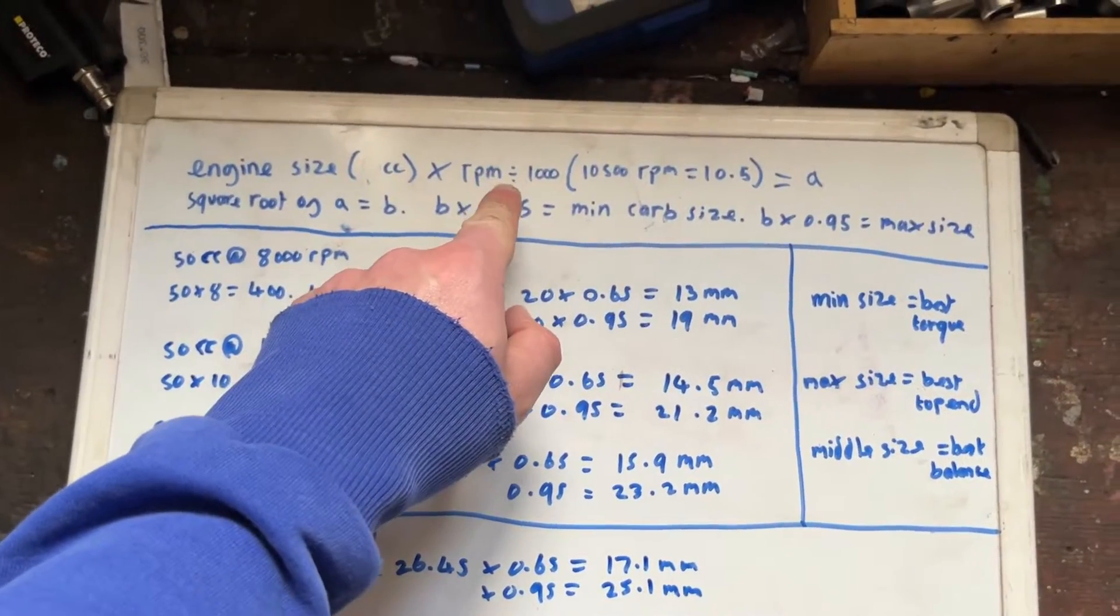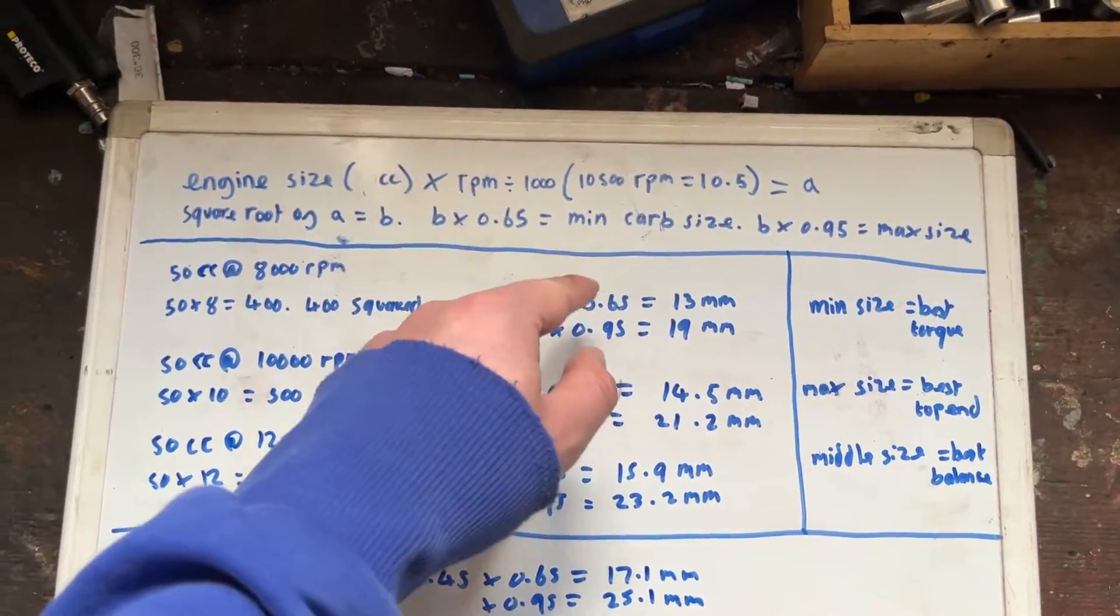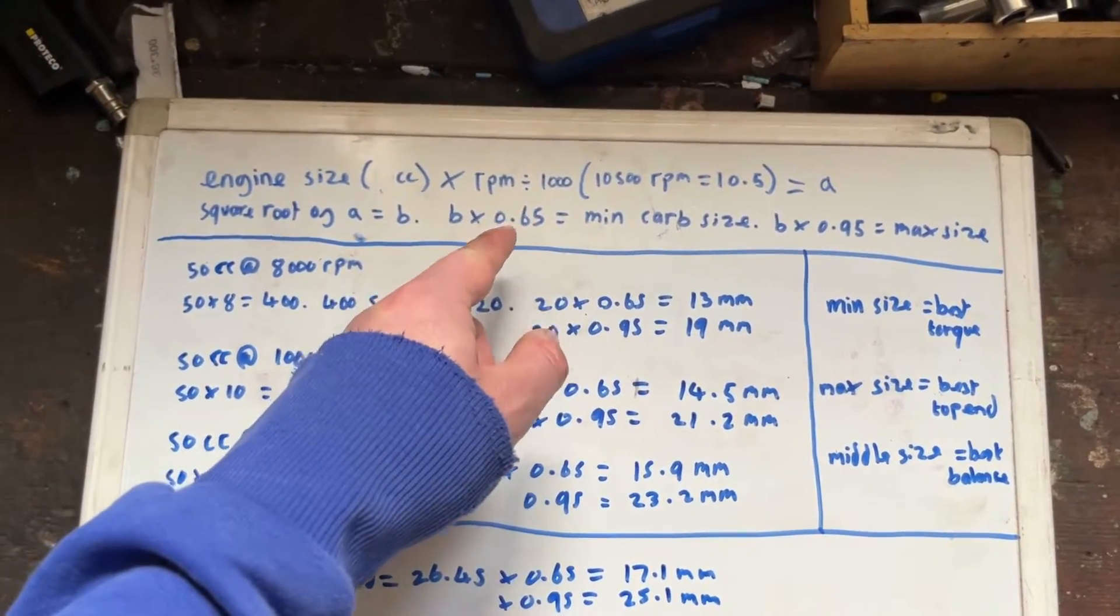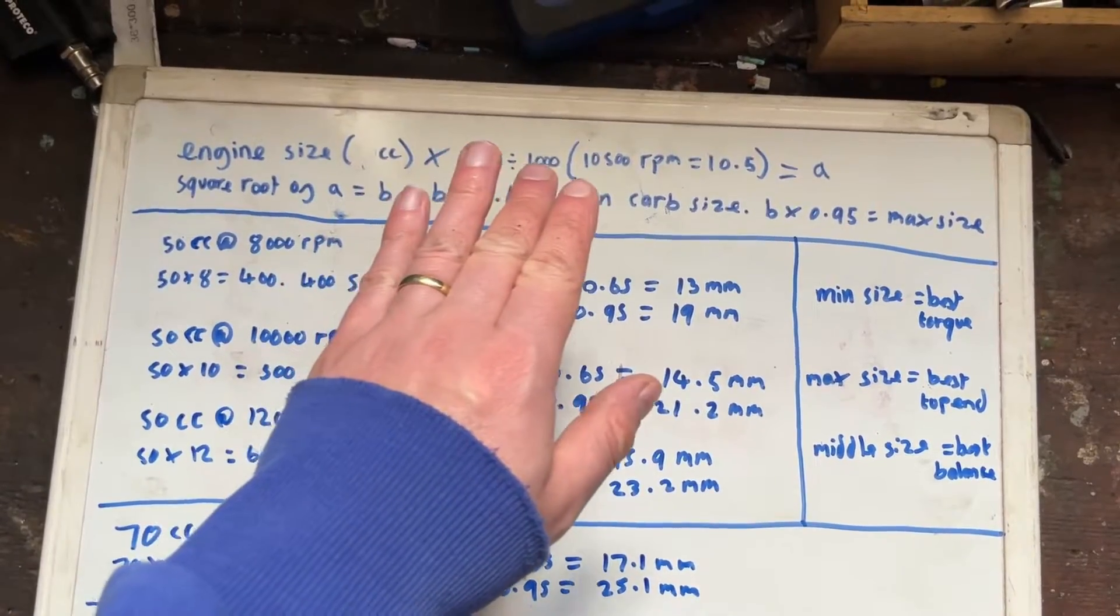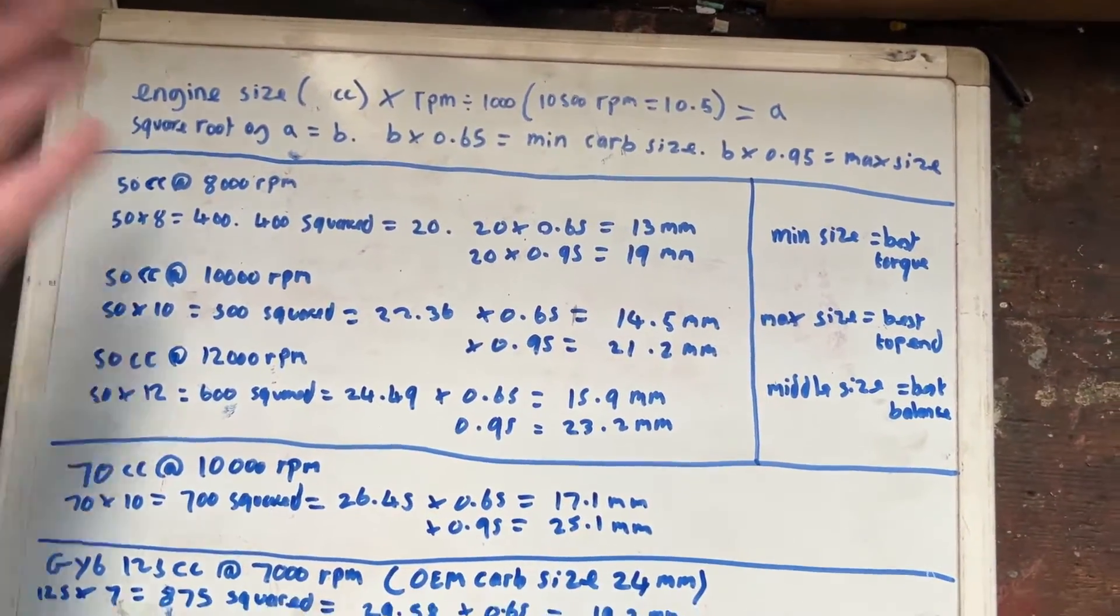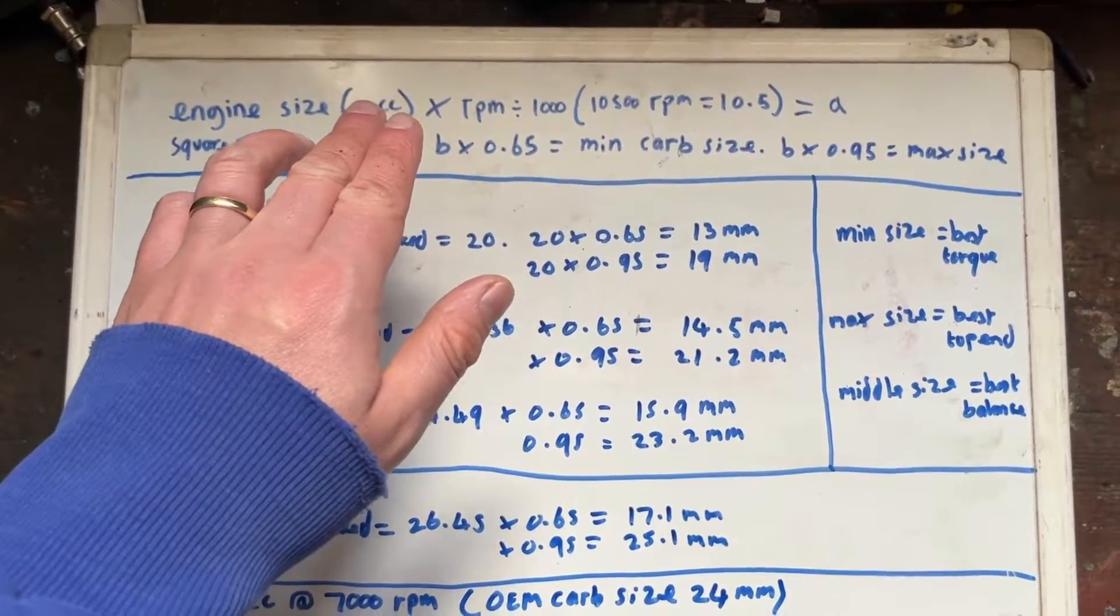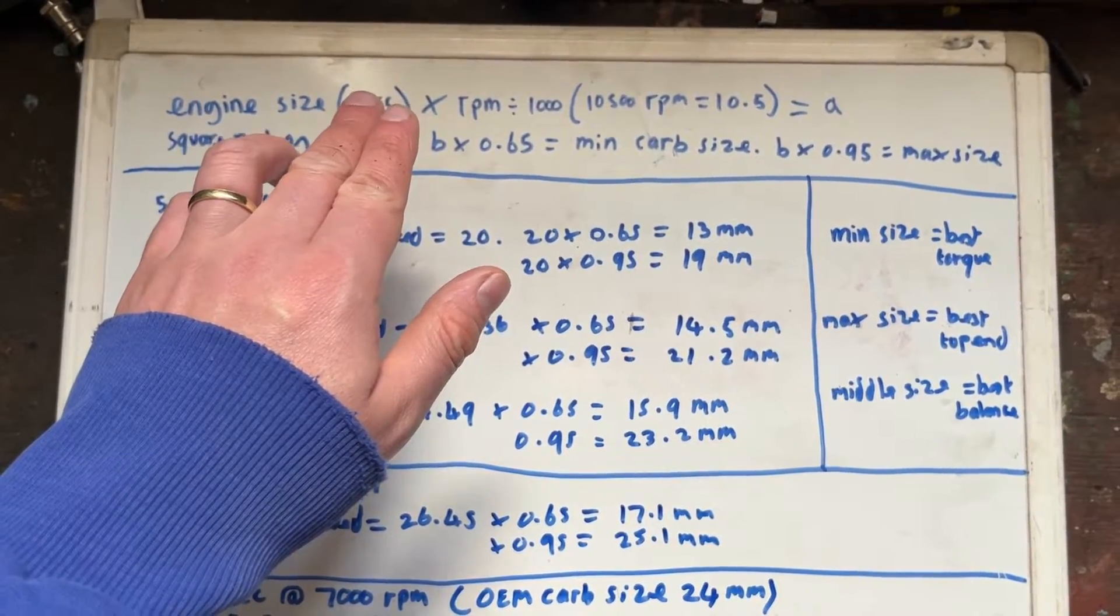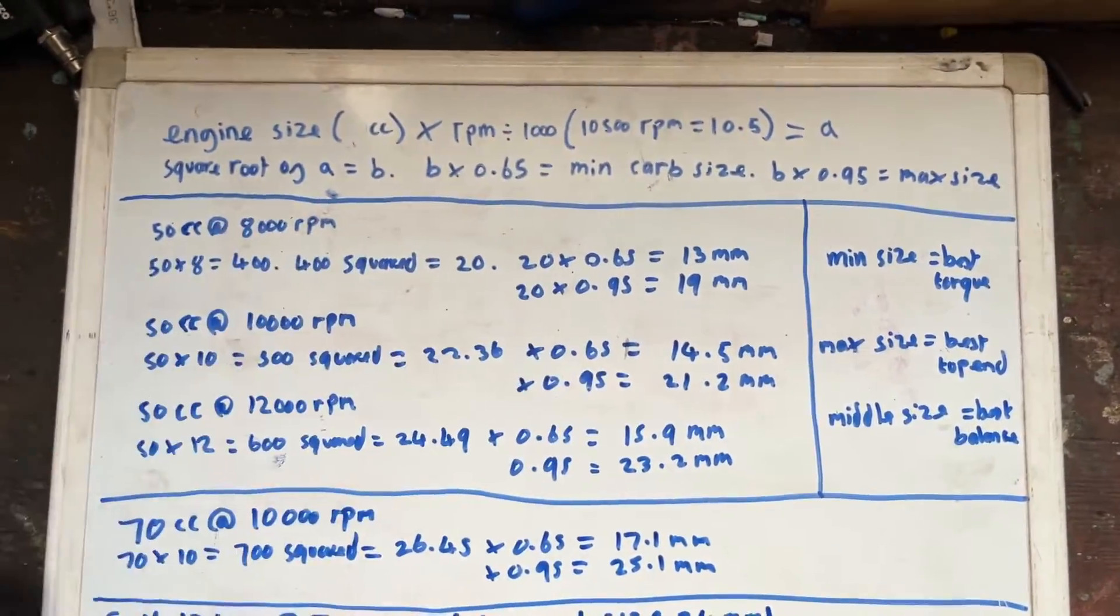So what I mean by that is if for example you say your bike is 50cc and it's actually 49, it's not going to throw out the equation enough to make too much difference. Same with the RPM if you say it's 10,000 RPM max and it's actually 10,500, it's not going to throw it out hugely, but if you get these numbers wildly wrong then obviously it's going to be out. So you need to have as close as possible to your actual engine size and as close as possible to your actual RPMs.